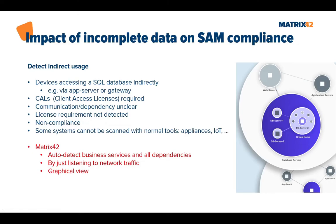Some systems cannot be scanned with normal tools — appliances with non-standard operating systems or IoT devices that don't support traditional inventory scanning. Matrix42 can auto-detect business services and all their dependencies by just listening to network traffic, and can display all dependencies in a graphical view.